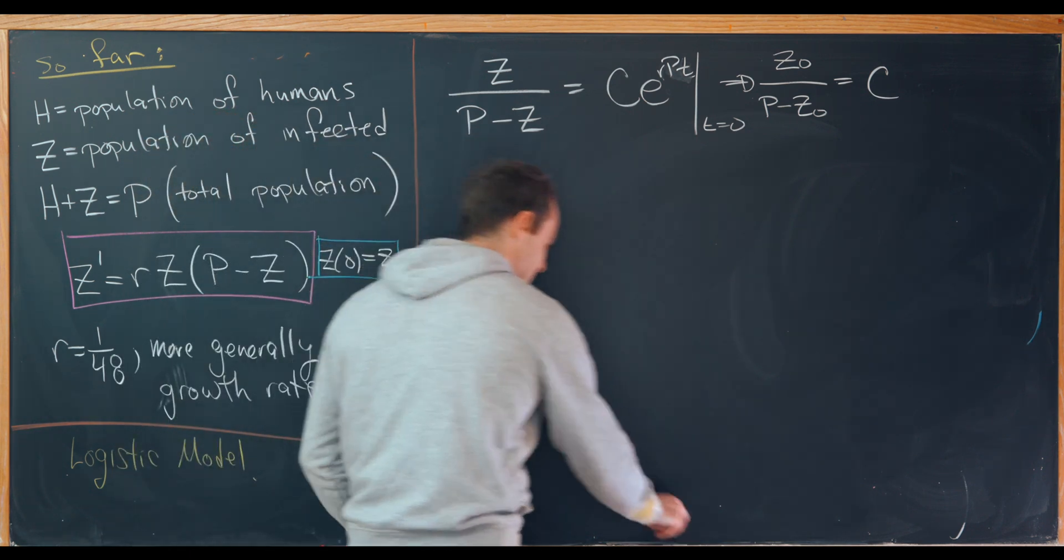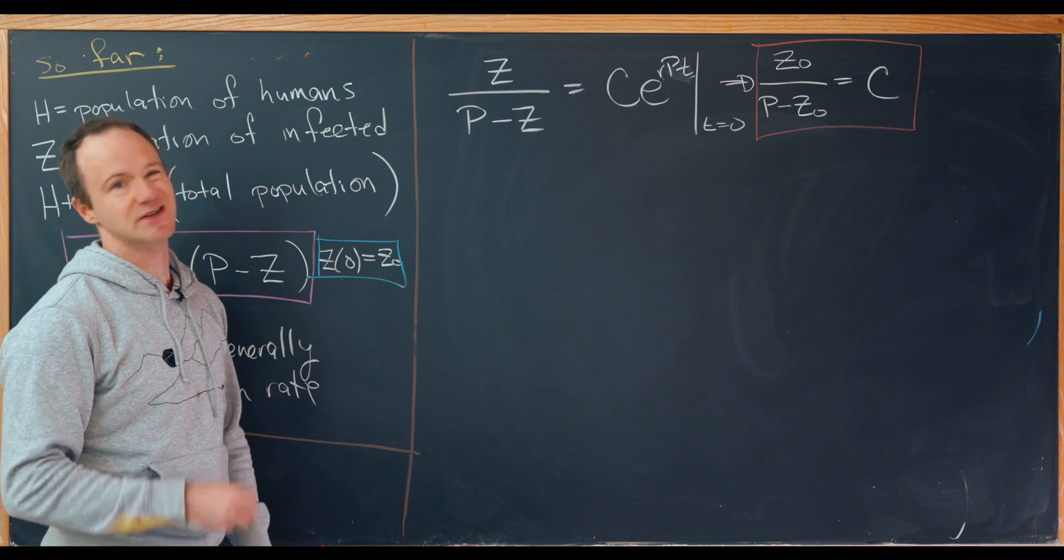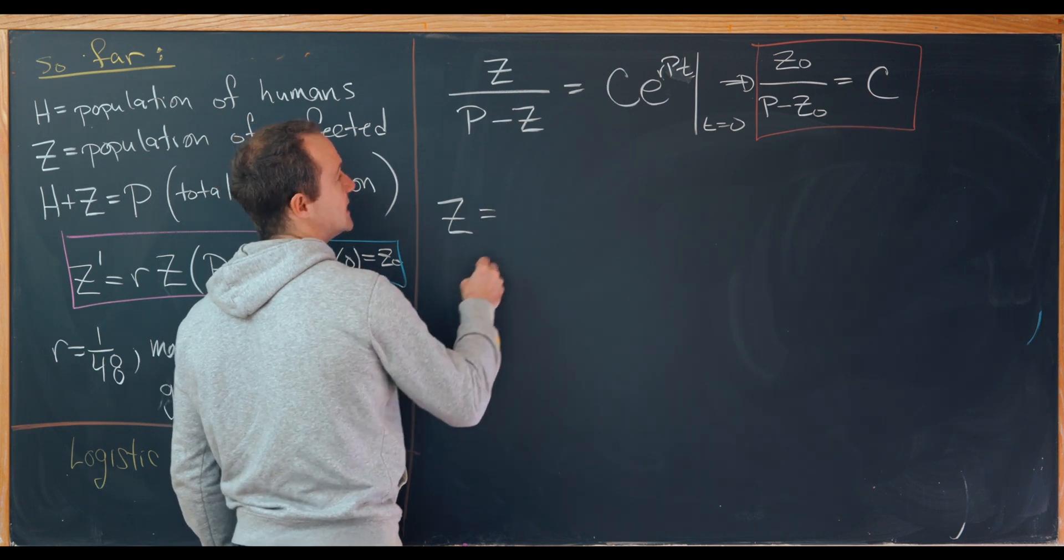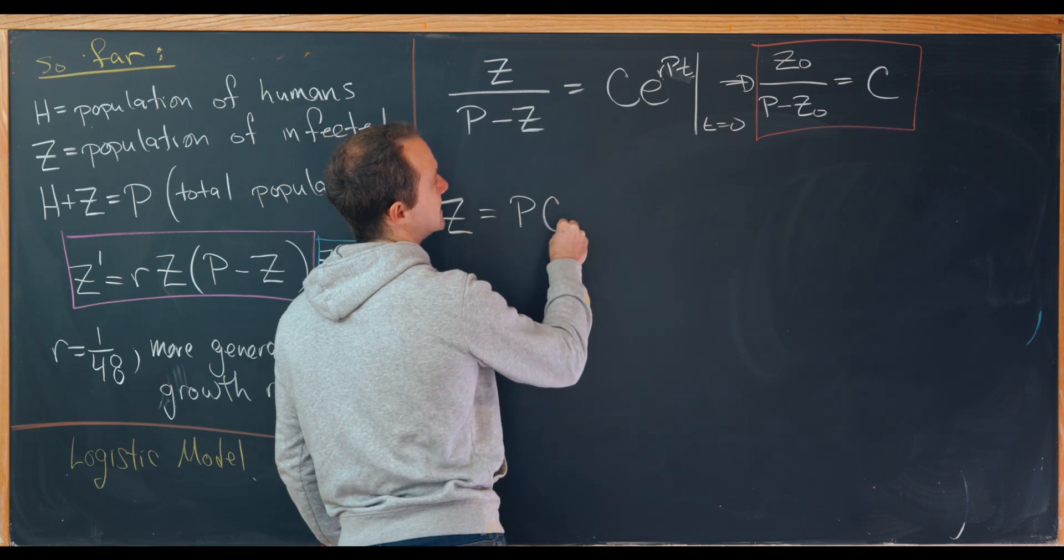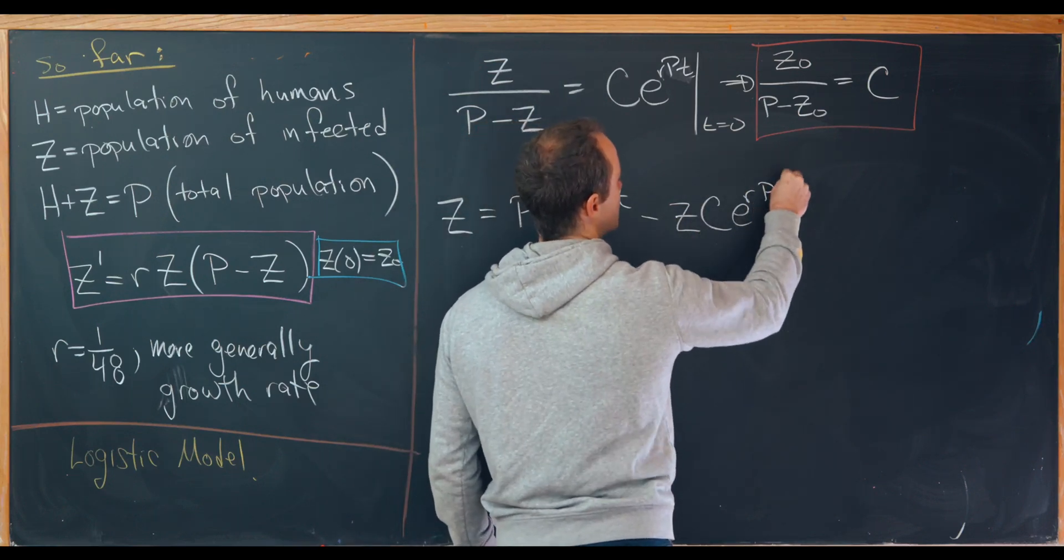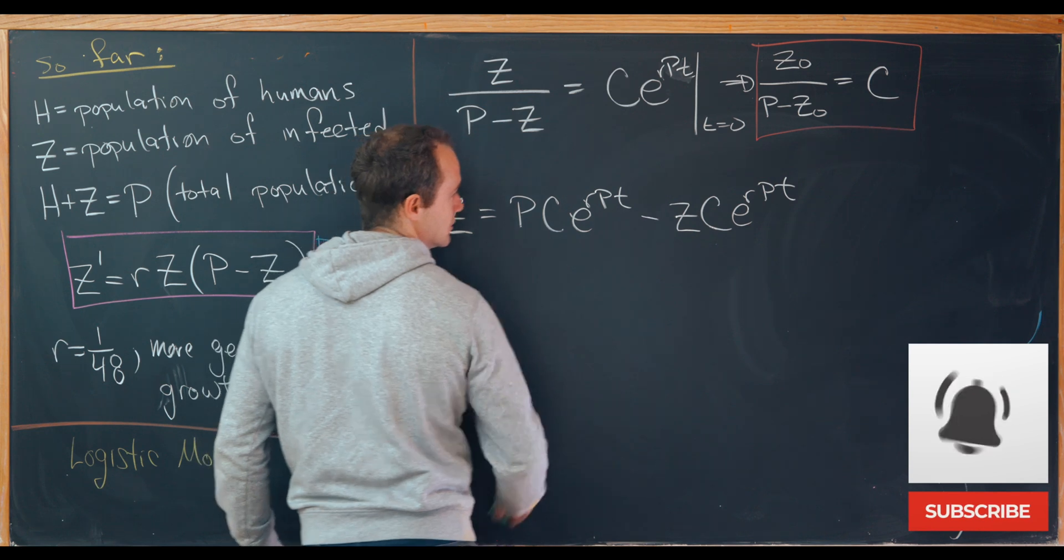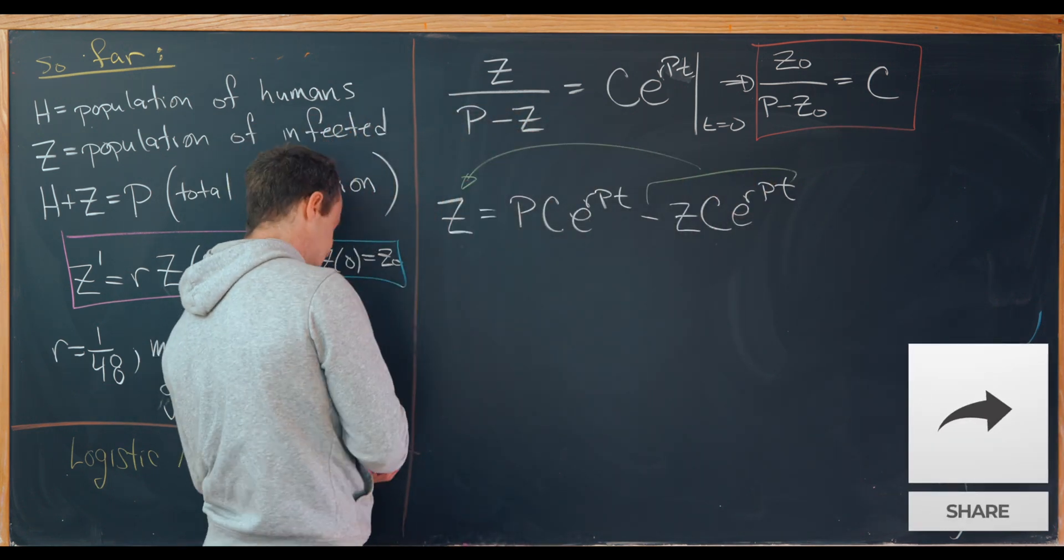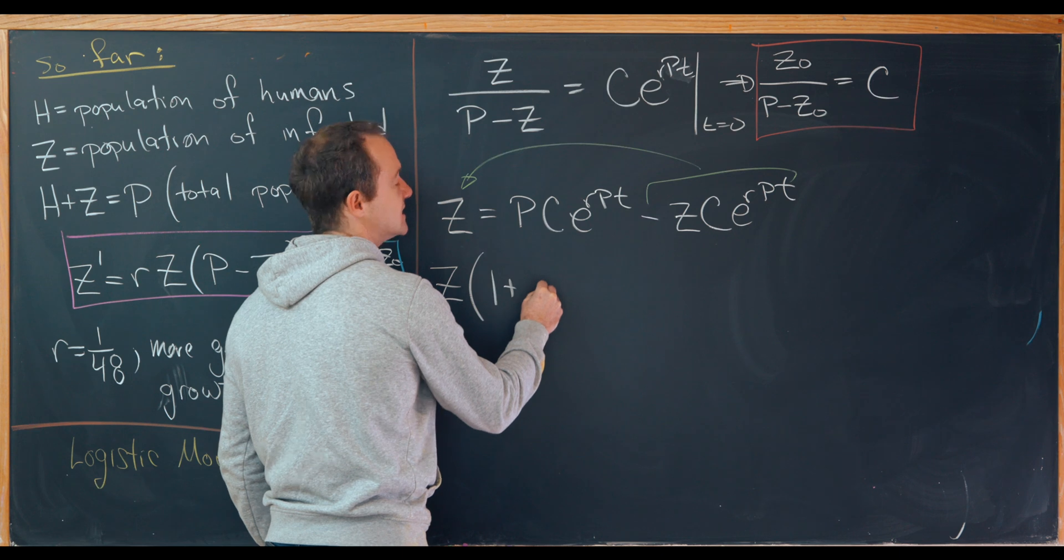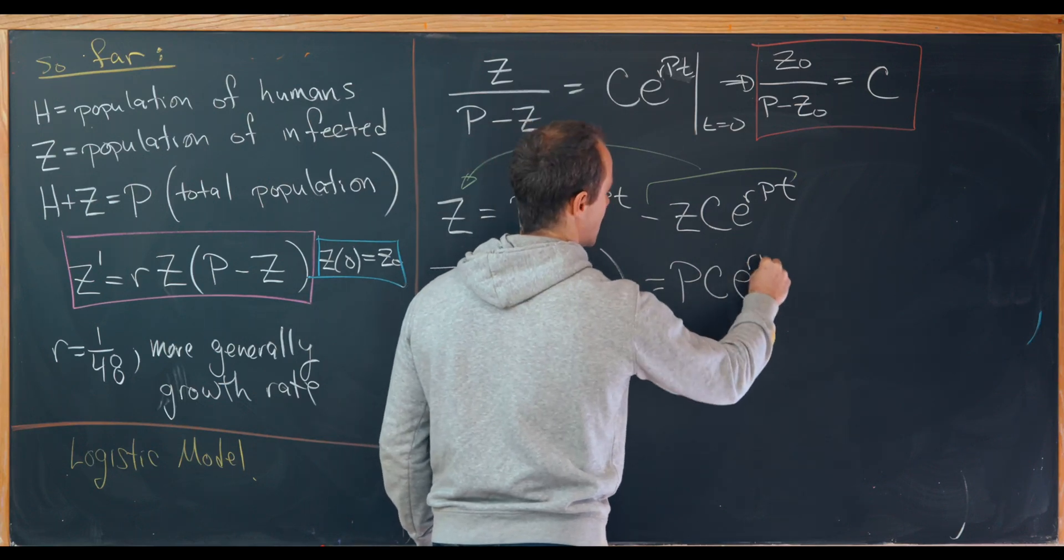So now let's maybe save this constant until the end and solve this with the arbitrary constant built in just so that it's a bit easier to work with. So we'll cross multiply, giving us Z equals P times C times E to the RPT minus Z times C times E to the RPT. And then we can move everything with Z to one side of the equation. So that means we'll move this term over here. And simultaneously, we'll factor a Z out. So that will give us Z times the quantity 1 plus C E to the RT equals P times C E to the RPT.